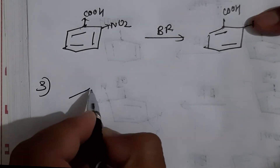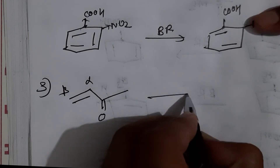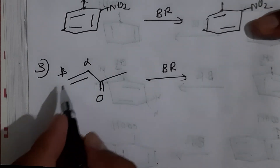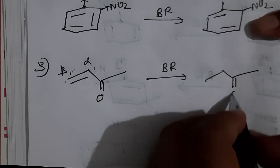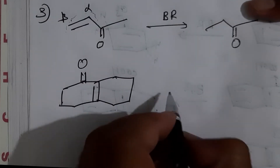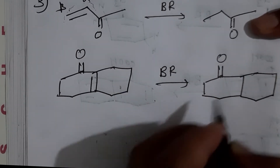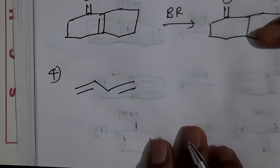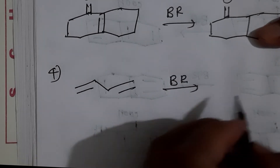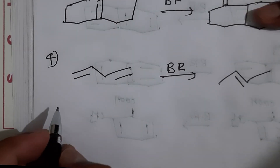The fourth application: Birch reduction reduces alpha-beta unsaturated carbonyl compounds. This means the carbonyl group is present, the alpha carbon is adjacent to it, and the beta carbon is next. Birch reduction removes the C=C double bond between the alpha and beta carbons, converting the alpha-beta unsaturated ketone into a saturated ketone, without affecting the carbonyl group. It also removes conjugation from conjugated alkenes.